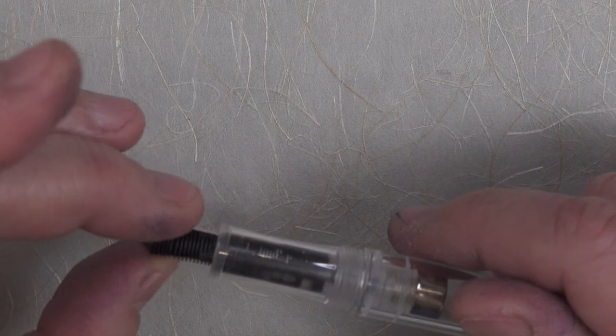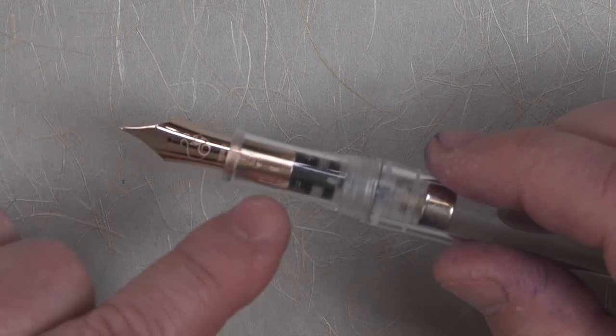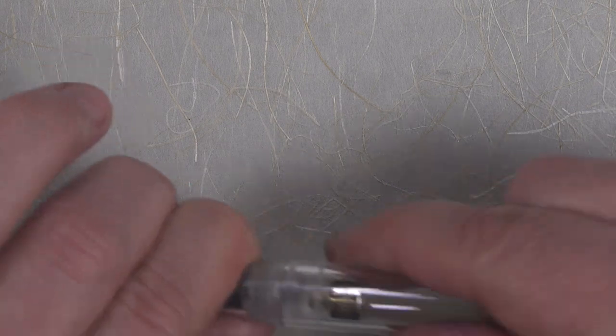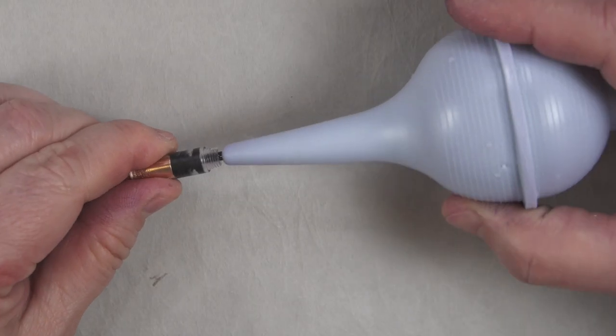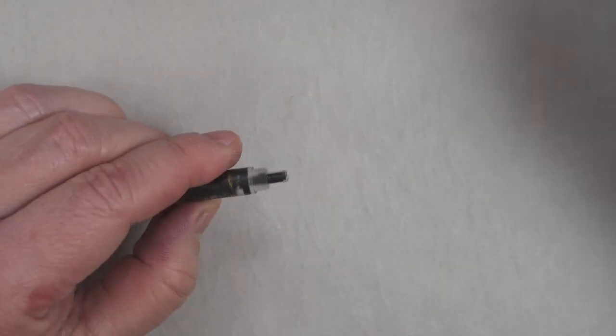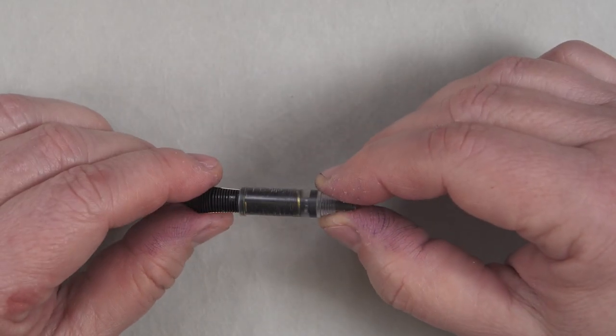Not being able to take that nib and feed out of the unit was really annoying when I was trying to clean it out. One thing that was helpful was the little tip of the nib unit fit right inside the bulb syringe, so I could kind of squeeze water through it.